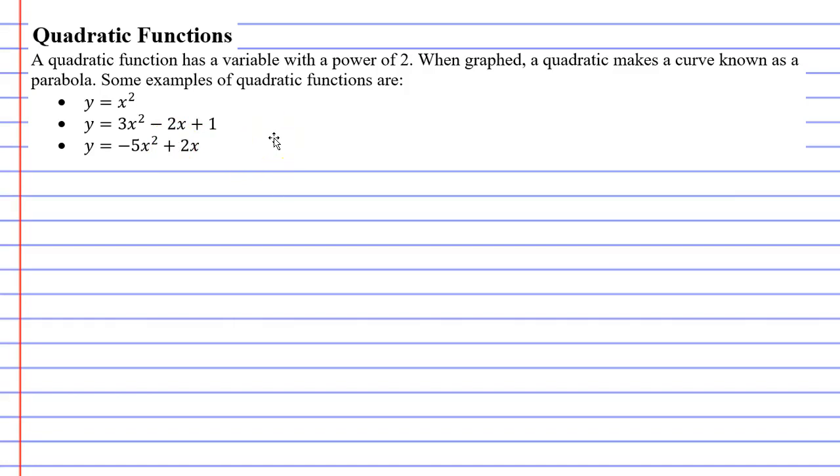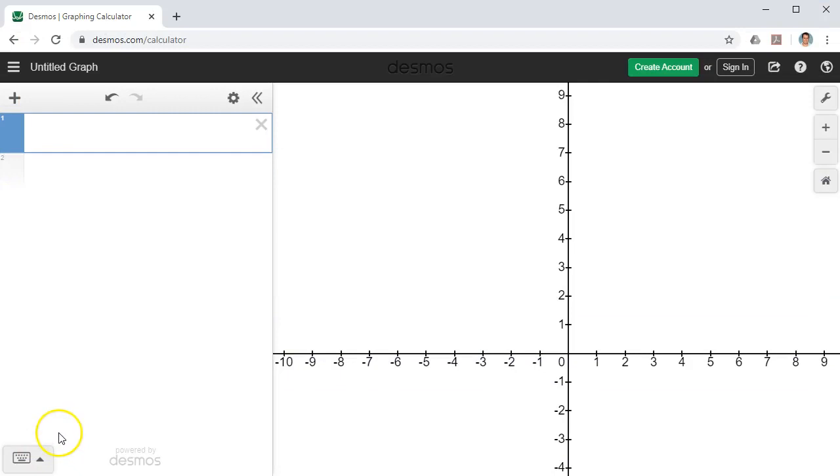So when you graph these, you get something known as a parabola. I'll show you what that looks like by going into Desmos, and I'll graph the three examples I just showed you.